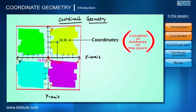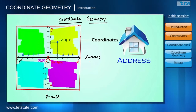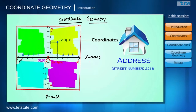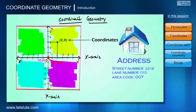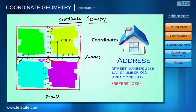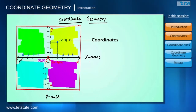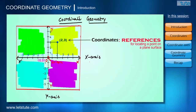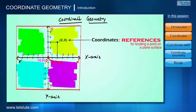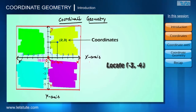We can say coordinates are the location or address of a point. For example, to write the address of my home, I give the street number, the lane number, the area code — all these are references to reach my home. Similarly, coordinates are references for locating a point on the plane.